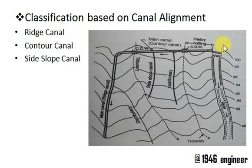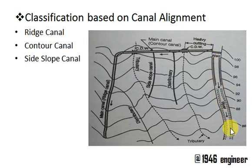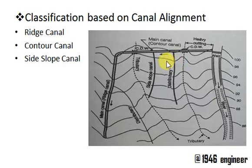Here this is the natural river course, and these are the contours of the terrain used to understand canal alignment.